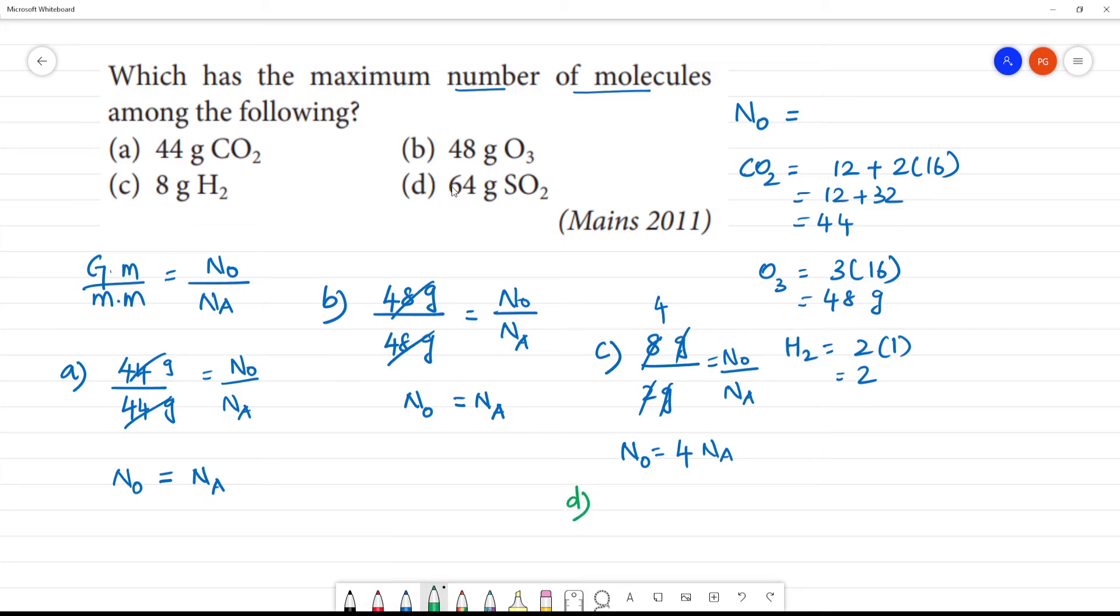Option D: 64 grams of SO₂. Molecular mass of sulfur dioxide: sulfur is 32 plus 2 times 16, which is 32 plus 32, equals 64. So 64 grams divided by 64 equals N₀/Nₐ, meaning N₀ equals Nₐ, Avogadro's number.